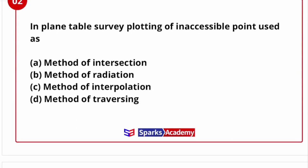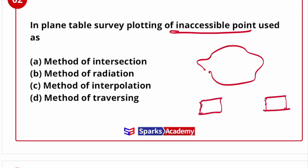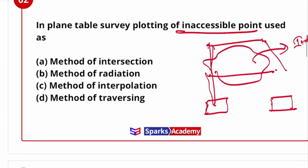The answer is fiducial. Second question: in plane table survey, the plotting of an inaccessible point — which method of plane table is used? Intersection, radiation, interpolation, or traversing? For example, if there is a pond, we can arrange and establish stations at a distance — two stations set, the points are established. That is called the intersection method. So if we have inaccessible points, we use the intersection method. The answer is A.